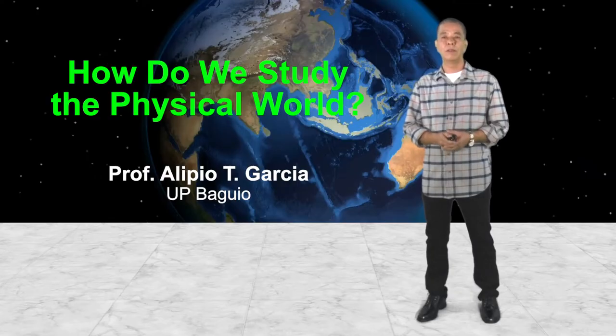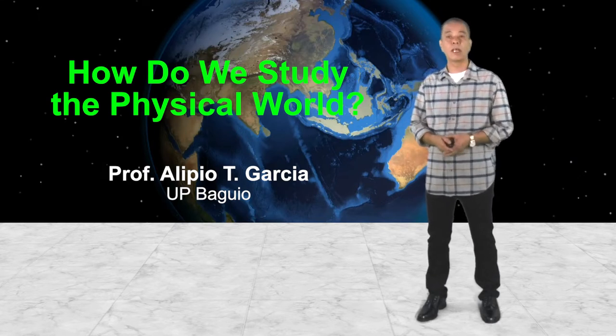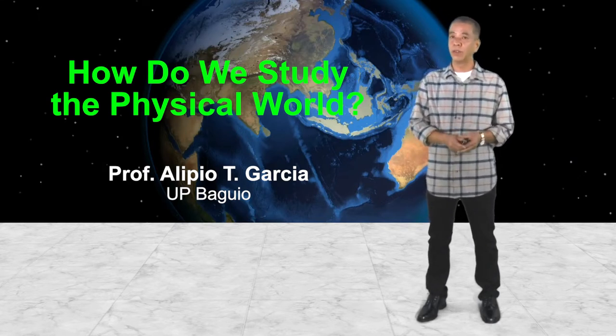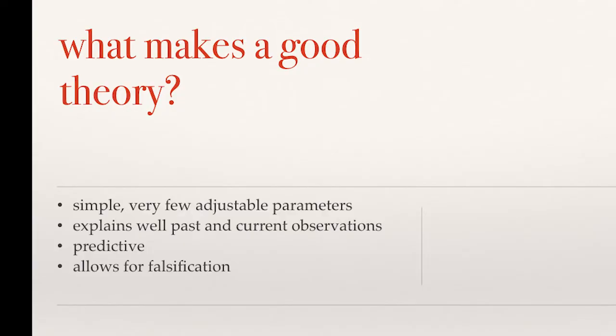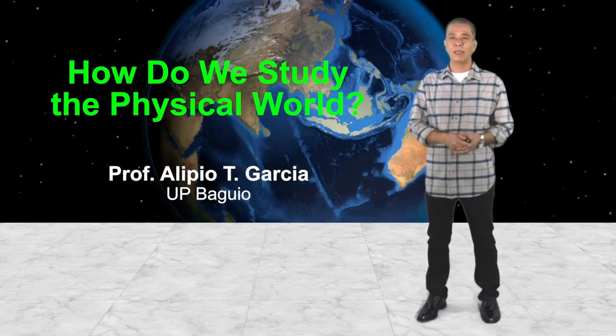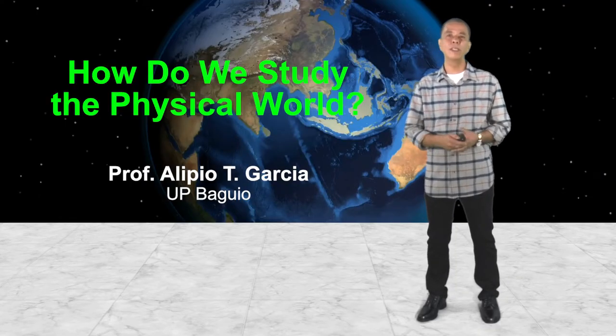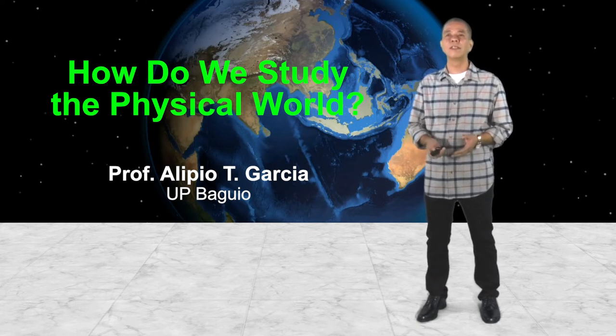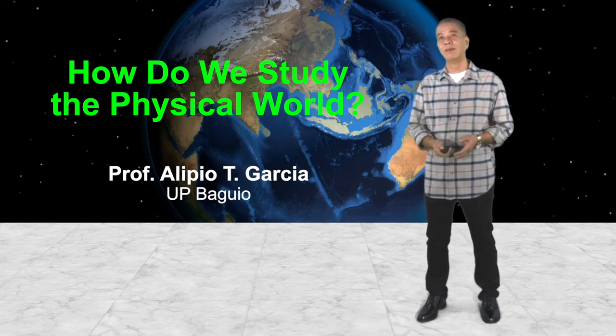Science has this predictive capability — a good theory has this predictive capability. And according to the philosopher of science Karl Popper, the most important attribute of a good theory is that it must allow for falsification. It should be falsifiable. There should be a clear-cut experimental design that could result in things that would falsify the theory. If it doesn't allow for falsification, then it's an overly encompassing theory — there is no way to know if it is wrong, because it is never wrong.